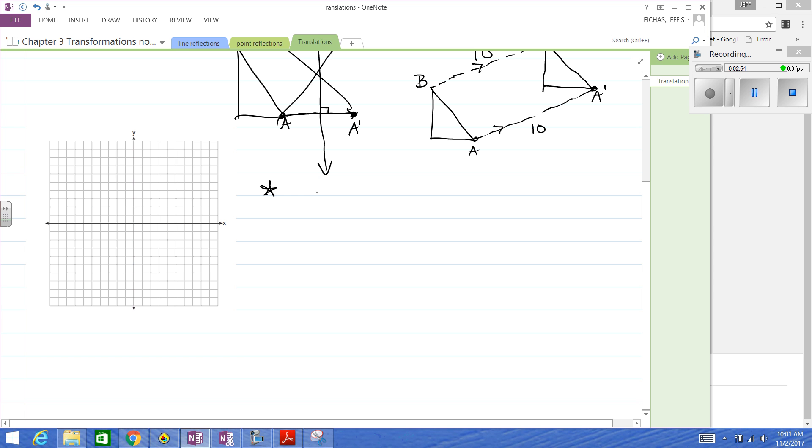Some notation we have to be ready for. Possibly capital T, and then there's a couple ways this can be written. Something like this, with parentheses, negative 2, 5. I really don't like this, but we kind of accept it. This will mean translate left 2, up 5.